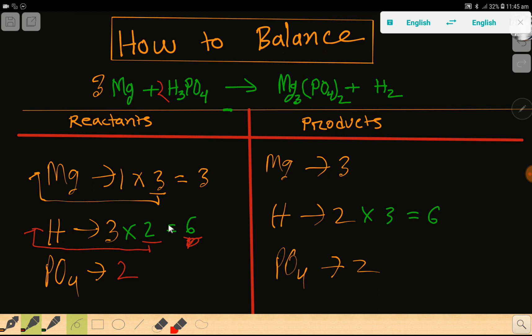Then hydrogen 6, hydrogen 6. Then phosphate 2, phosphate 2. So everything is balanced.